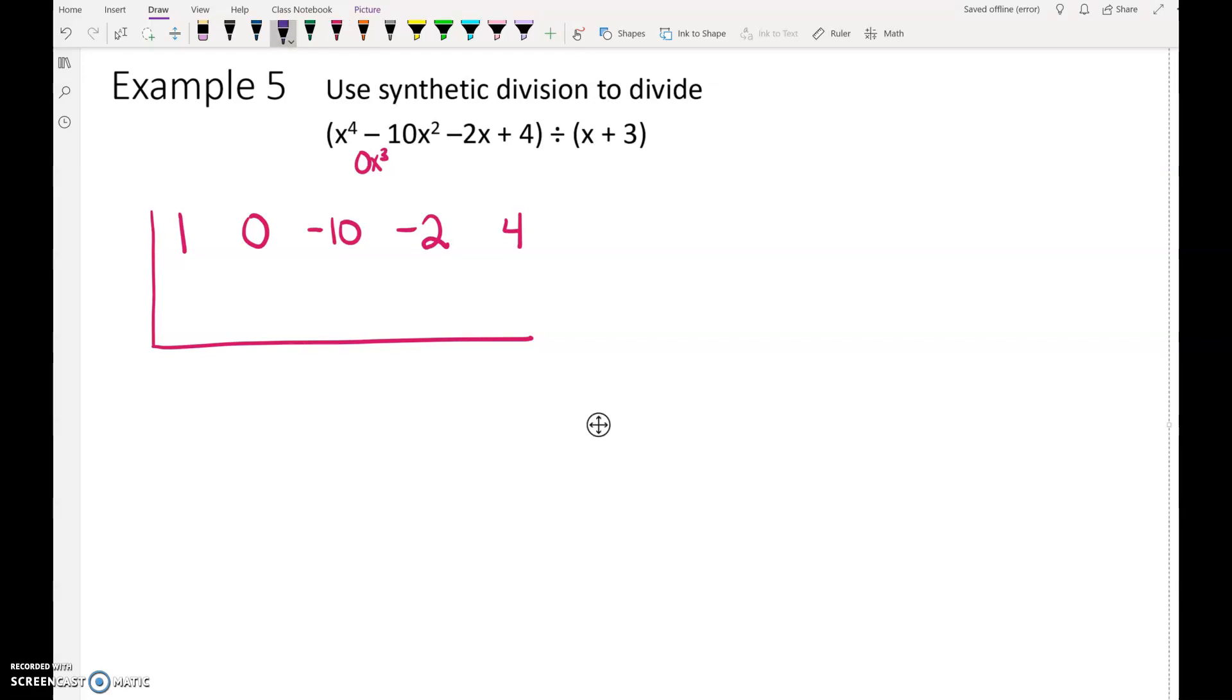So when we plug this in for synthetic division, we have 1x to the fourth, 0x to the third, negative 10x squared, negative 2x and 4. What number do I need to put outside of the synthetic division? Negative 3. Whatever this is, you take the opposite of that and put that outside. First step is to drop your first number down. Then you can start the process of multiply, add, multiply, add, multiply, add until you get to the end. Negative 3 times 1 is negative 3, add.